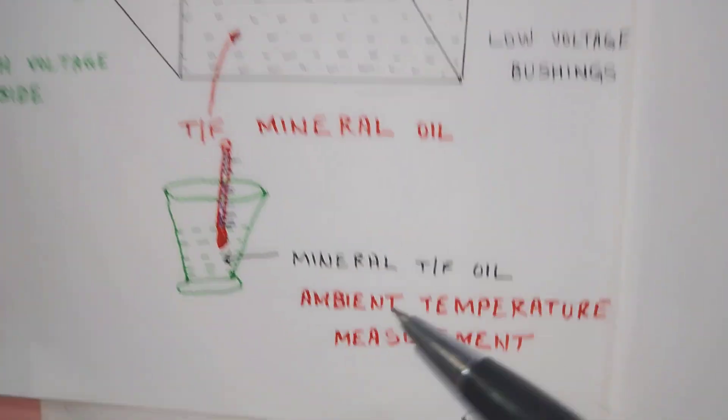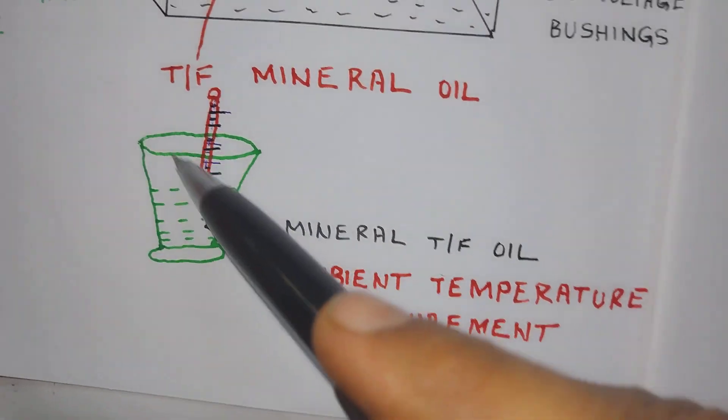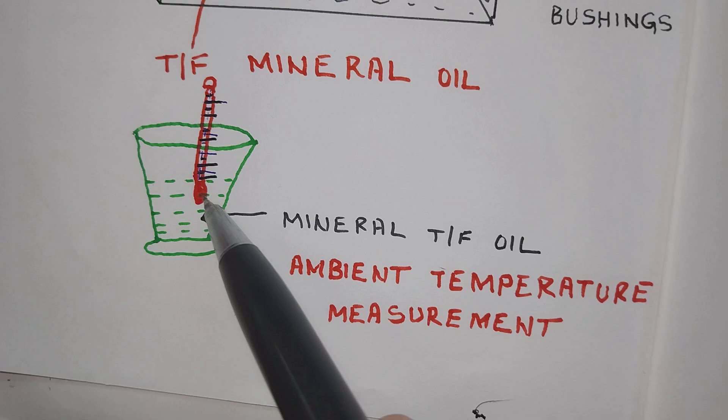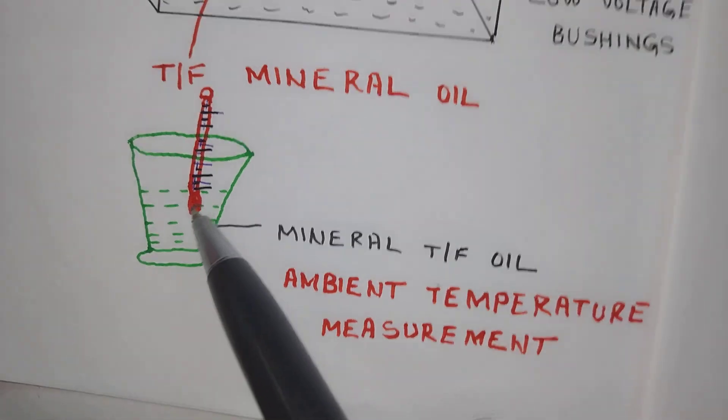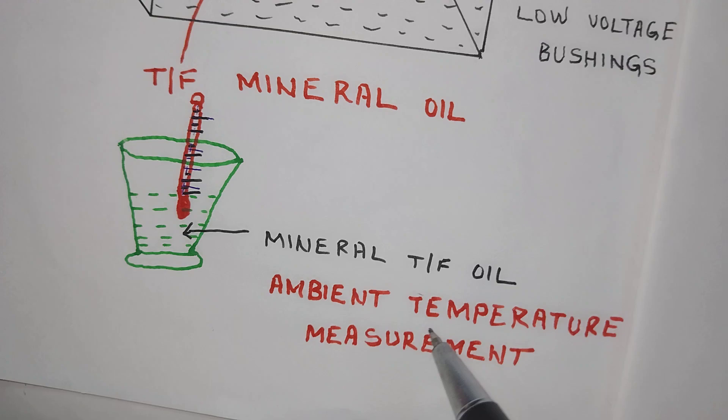And this is a simple glass in which mineral oil or water is kept. This is a thermometer to measure the ambient temperature.